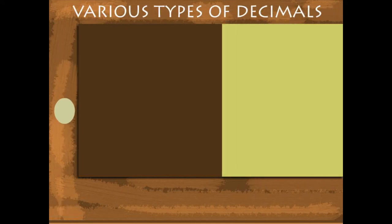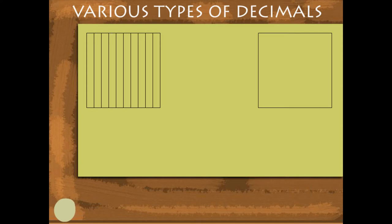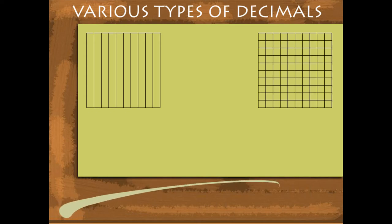Various Types of Decimals. Here are two squares. One is divided into 10 columns and the other into 100 squares.